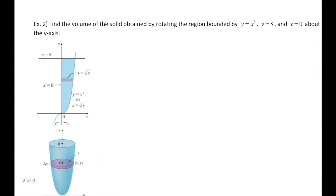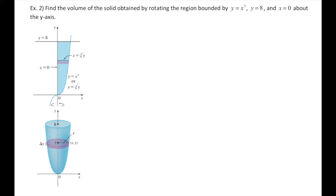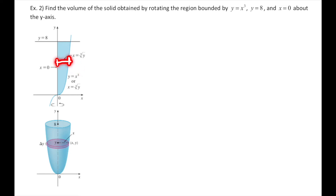Let's look at another one. This time we're rotating horizontally: find the volume of the solid obtained by rotating the region bounded by y equals x cubed, y equals 8, and x equals 0 about the y-axis. We have a shaded region and we're going to be rotating horizontally. Our rectangles are horizontal with thickness dy, since we are moving vertically and all of our slices are moving vertically. Our radius of rotation is now an x-distance, so we need to define x in terms of y: from y equals x cubed, we get x equals y to the one-third.